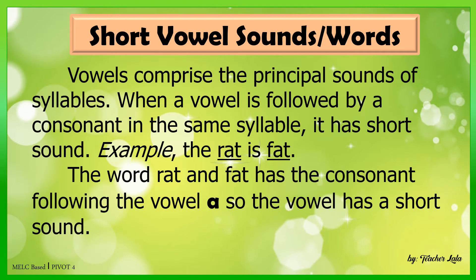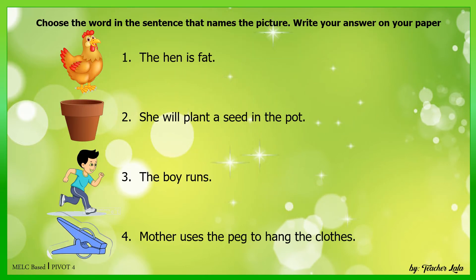Vowels comprise the principal sounds of syllables. When a vowel is followed by a consonant in the same syllable, it has a short sound. For example, the rat is fat. The words rat and fat have the consonant following the vowel A, so the vowel has a short sound. For your other activity, choose the word in the sentence that names the picture. Write your answer on your paper.